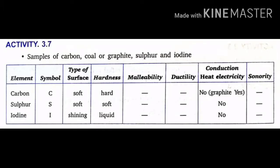Activity 3.7 — Samples of carbon (coal or graphite), sulfur, and iodine. The table columns are: element, symbol, type of surface, hardness, malleability, ductility, conduction of heat, conduction of electricity, and sonority.